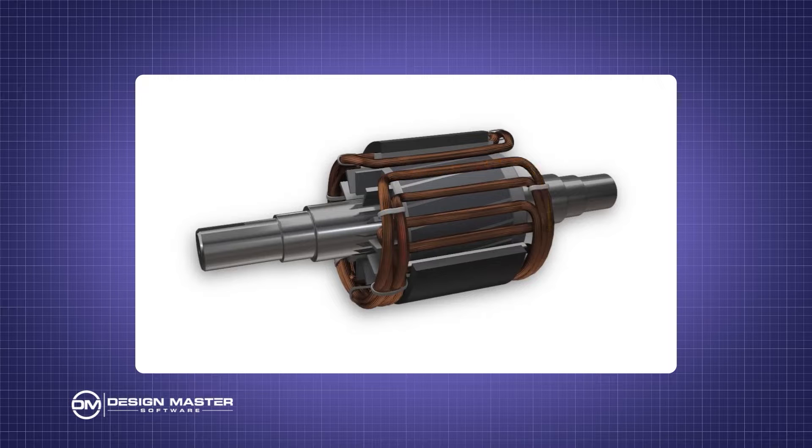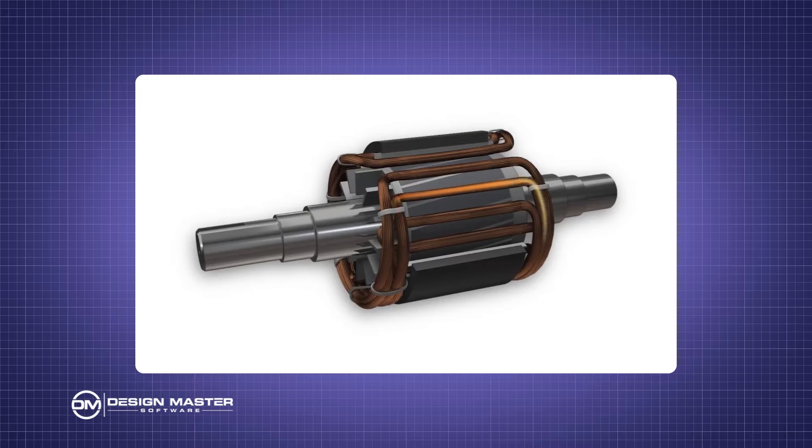The NEC table calls it locked rotor rather than inrush — what's the difference? It's really semantics. The rotor is not literally locked, but the electrons don't know the difference. They rush in and see the rotor is not moving. They don't know if it's locked or just not moving — it looks the same to them. So it's called locked rotor, but it's also inrush, and it's only happening when the rotor is not moving.